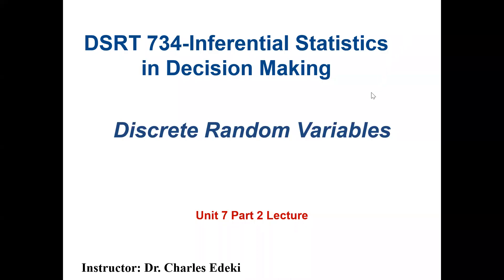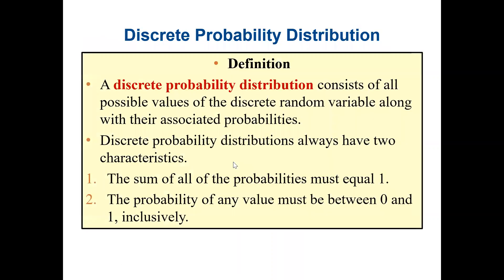Welcome to DSRT 734 class. This lecture covers discrete random variables. A discrete random variable is based on counting, while a continuous random variable is based on measurements. A discrete probability distribution consists of all possible values of the discrete random variable along with the associated probabilities. It always has two characteristics: the sum of all probabilities must equal one, and the probability of any value must be between zero and one inclusively.